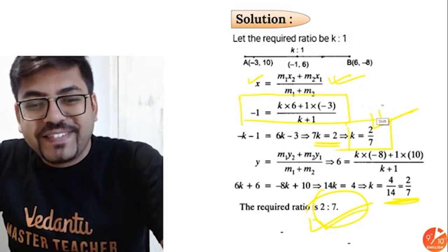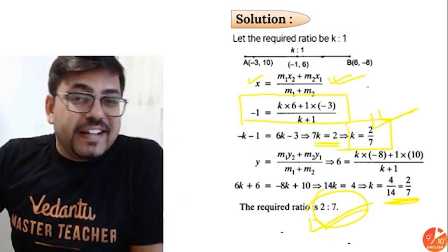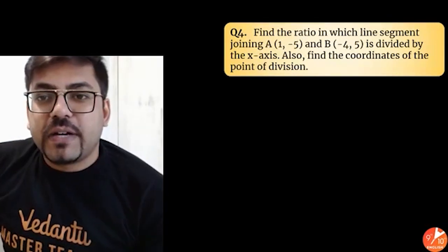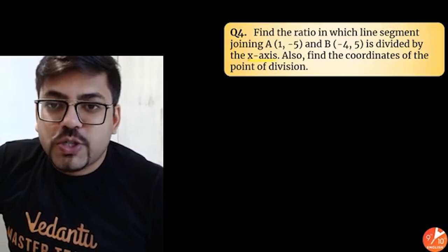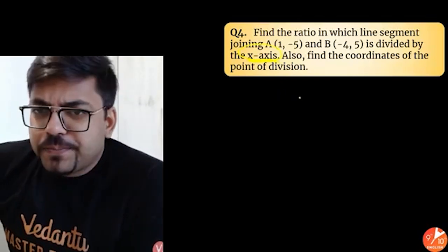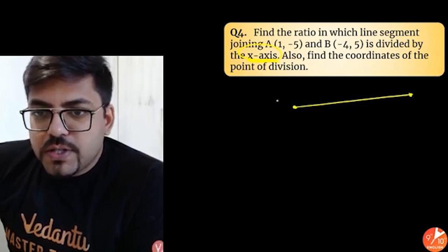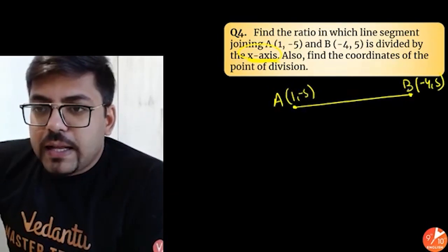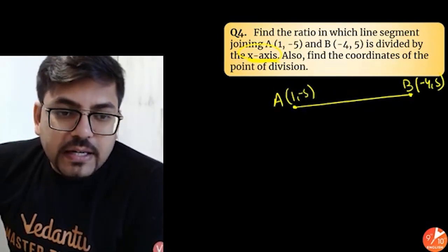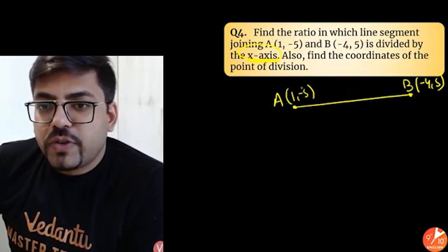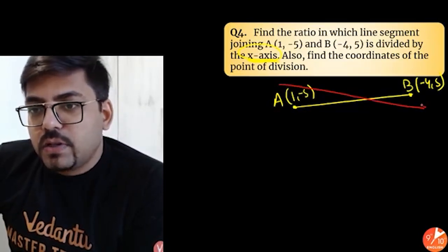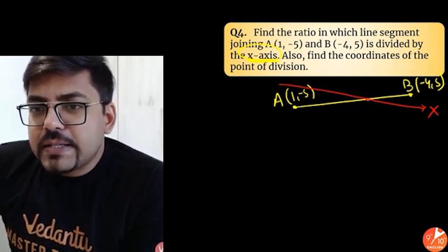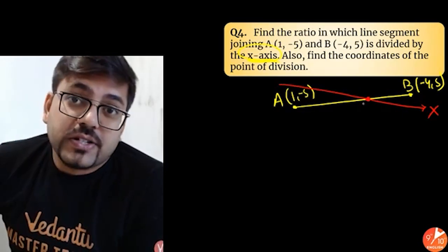I hope you all understood that. Here is the next question: find the ratio in which the line segment joining A (1, minus 5) and B (minus 4, 5) is divided by the x-axis. So you have a line from A to B which is intersected by the x-axis at some point P. This point P has a special property: its coordinates will be in the format X comma 0, because any point lying on the x-axis has its y-coordinate always 0.